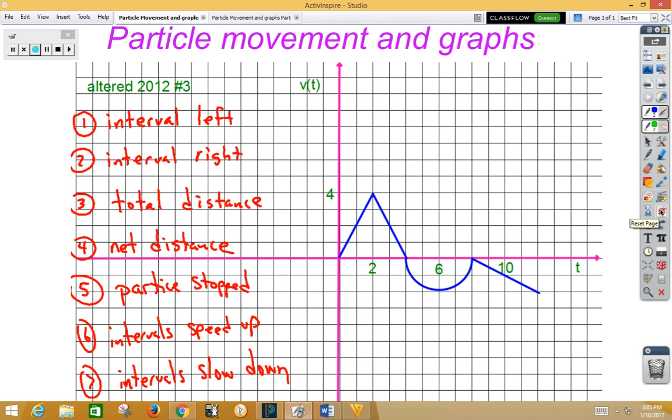With 3 and 4, we're talking total distance and net distance traveled. To go from velocity to position, we need to integrate. What we're looking at is the area under the curve from 0 to 4, the area under the curve from 4 to 8, and the area under the curve from 8 to 12. We're going to use geometric formulas to help us do that.